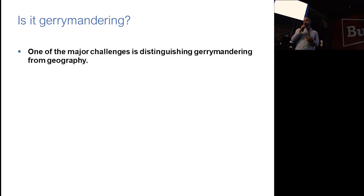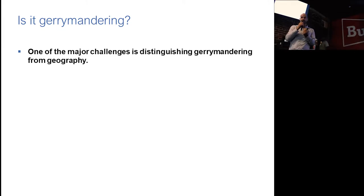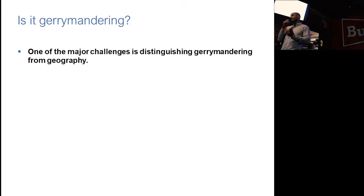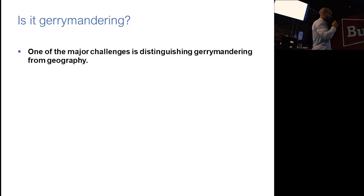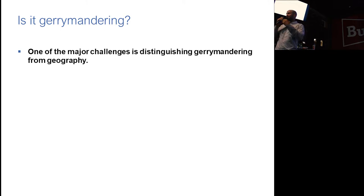One of the biggest challenges in detecting gerrymandering — which is the intentional drawing of districts to advantage your party or yourself — is separating it from the effects of geography. Sometimes doing that is really obvious. I'm going to explain how the effects of geography can be mistaken for the effects of gerrymandering, and vice versa. Sometimes the distinction is obvious.